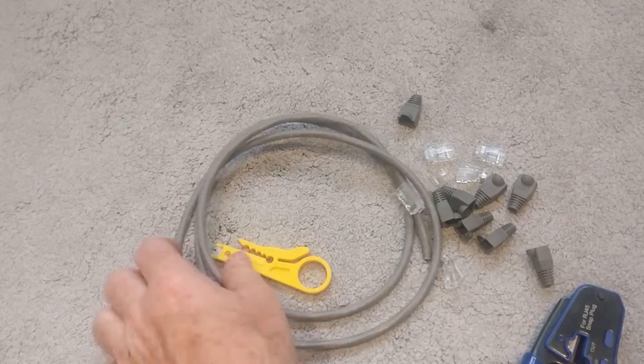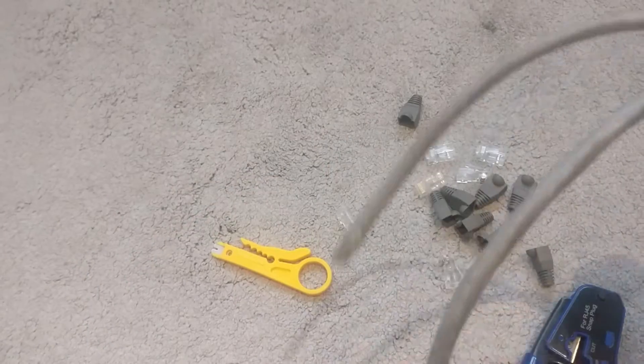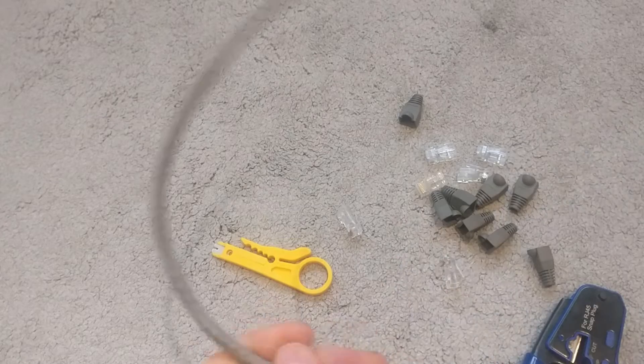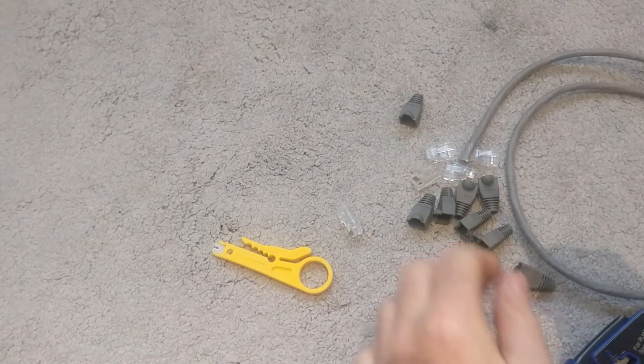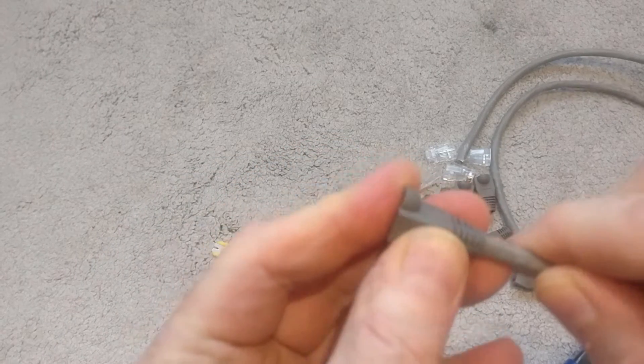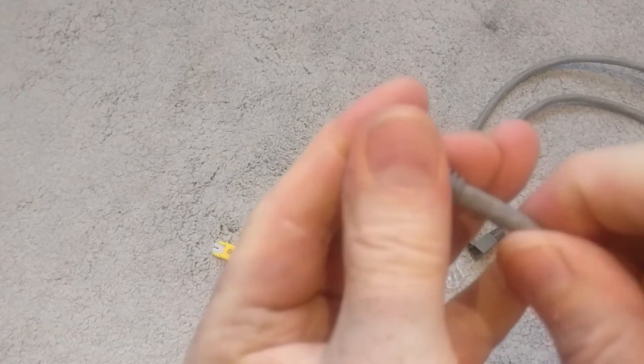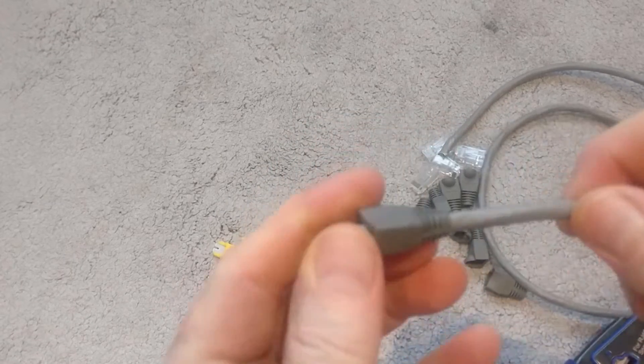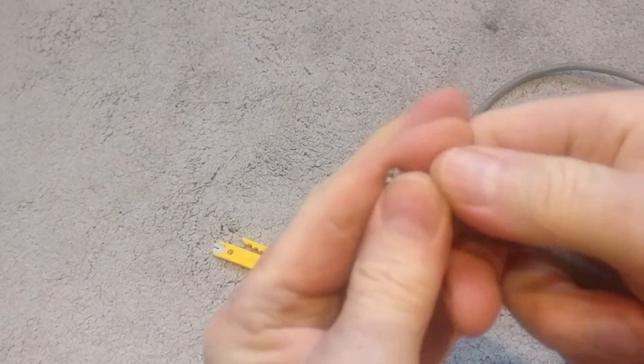So first thing you want to do is get your ethernet cable. This is Cat 6. Get that, first thing you want to do is slide the boot on before it gets more difficult. Nice and simple when it's a nice blank end, so just put that on and then pull it back and get that out of the way for now.